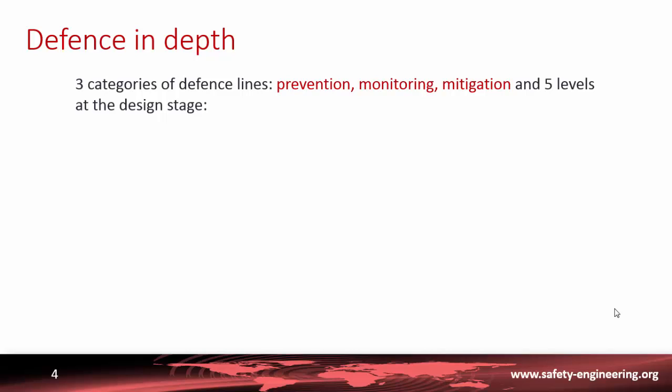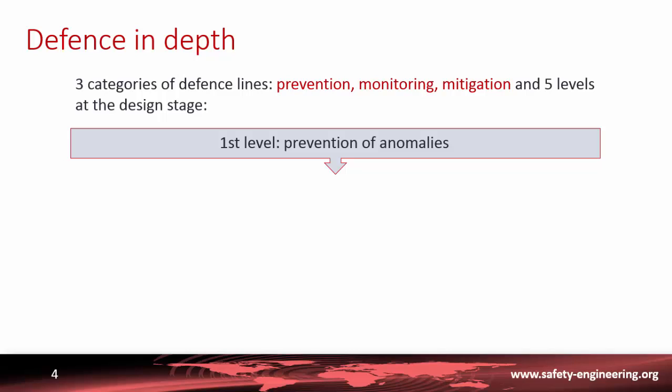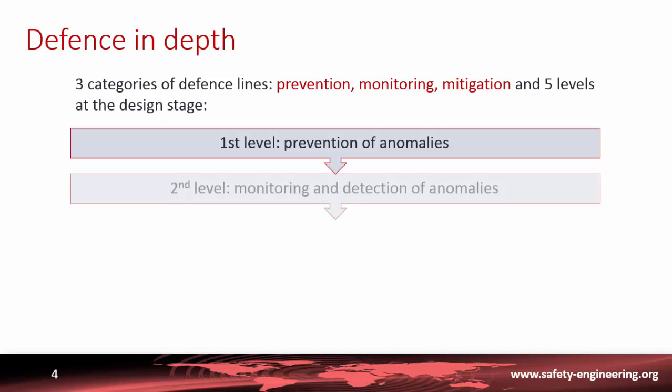We consider three categories of line of defense that we call prevention, monitoring, and mitigation, and these are developed in five levels at the design stage. The first level is prevention of anomaly, done through the quality of products, the quality of design, the margins taken in designing the various components, and in operation through limits in the domain of operation.